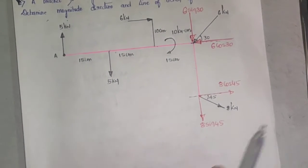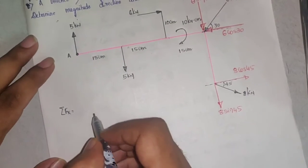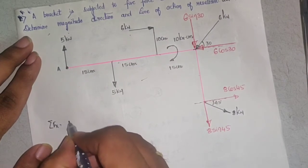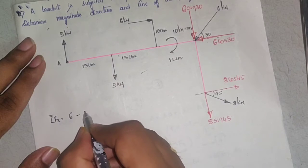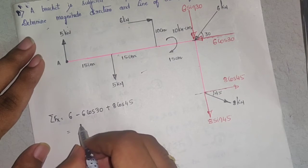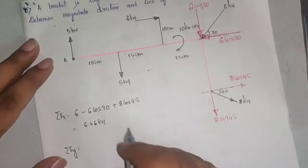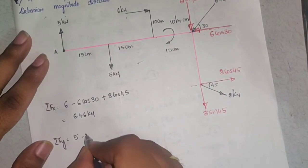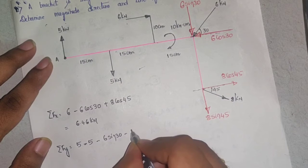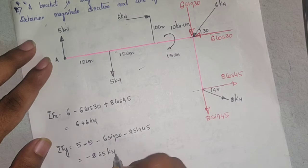Grouping forces in the x direction: plus 6 (rightward), minus 6 cos 30 (leftward), plus 8 cos 45 (rightward) — giving ΣFx = 6.46 kN. Grouping forces in y direction: plus 5 (upward), minus 5, minus 6 sin 30, minus 8 sin 45 — giving ΣFy = minus 8.65 kN.